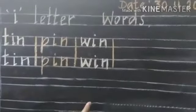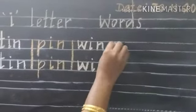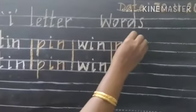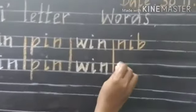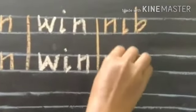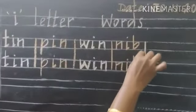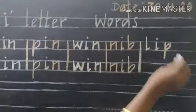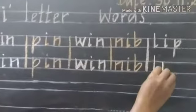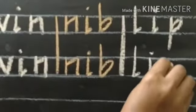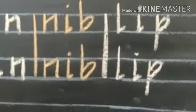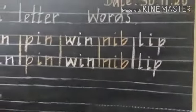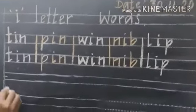Now we are going to write nib. N-I-B, nib. Write once again. N-I-B, nib. Next word is lip. L-I-P, lip. Write once again. L-I-P, lip.